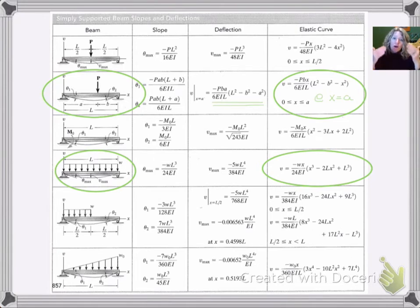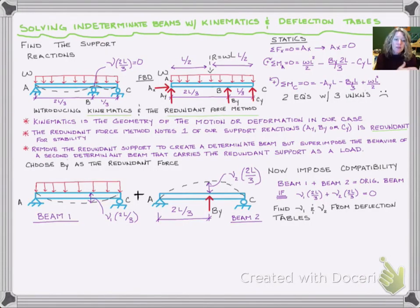For the point load, we're finding it at X equals A. We could use the elastic curve equation circled and plug in X equals A, or use what's written in the deflection column when X equals A. Notice the sign—we have a negative because this deflects down. Our BY points up to mimic the redundant support, so we'll change that sign.